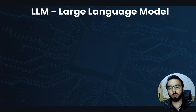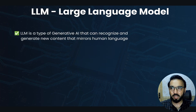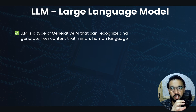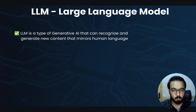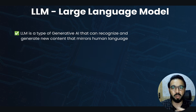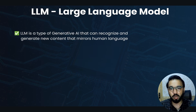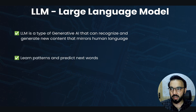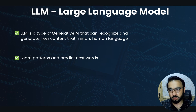What is a large language model, also known as LLM? LLM is a type of generative AI. It can recognize and generate new content similar to generative AI, but with a minor addition — it mirrors human language, so the generated content looks like something a human would write. How does an LLM actually work? LLMs learn patterns from the data provided.